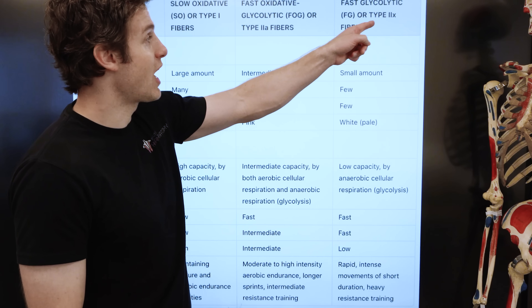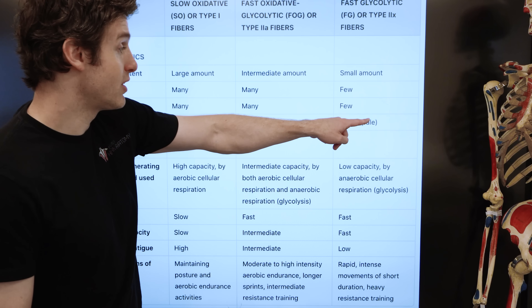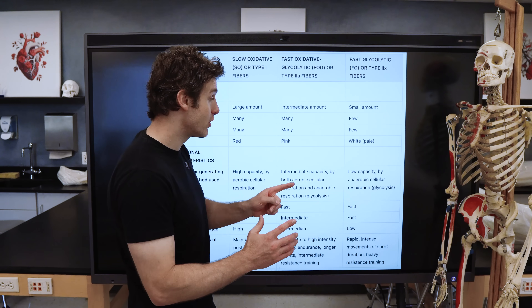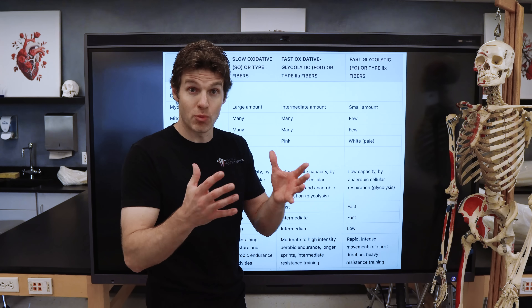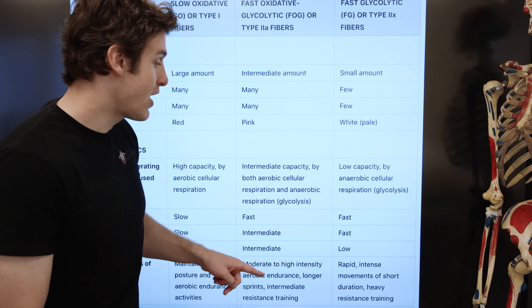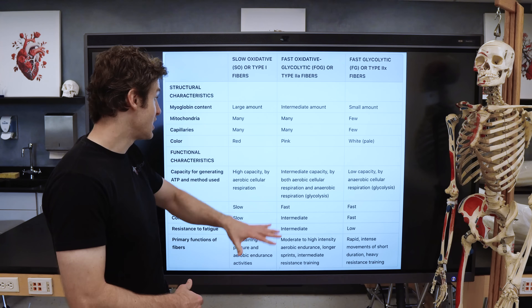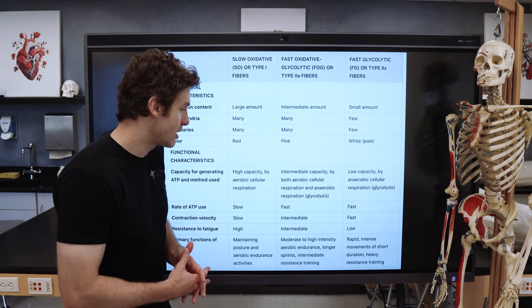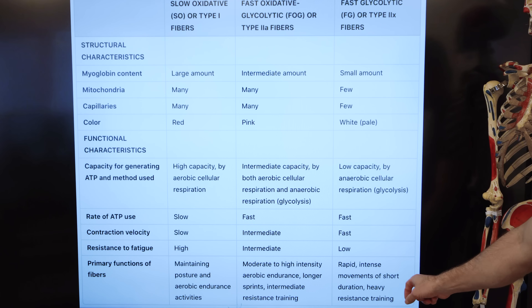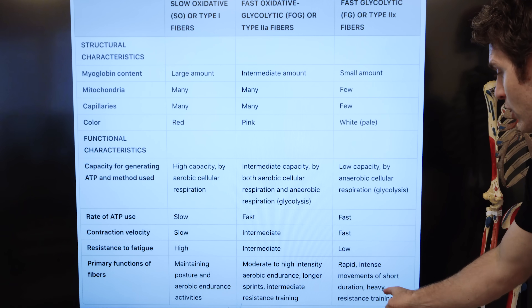The fast glycolytic or type 2X fibers are the fastest. They have a small amount of myoglobin, few mitochondria, and few capillaries, giving them a white to pale color. They have a low capacity to generate a lot of ATP, but they can make that ATP really quickly through anaerobic glycolysis. Their rate of ATP use is fast, contraction velocity is fast, but resistance to fatigue is much lower than the other fiber types. They're great for rapid intense movements of short duration — think a full 100-meter dash and heavier resistance training.